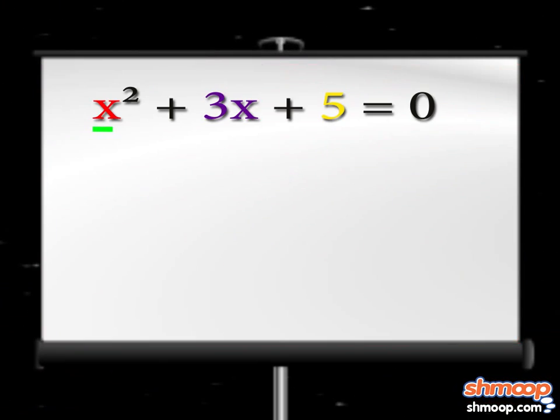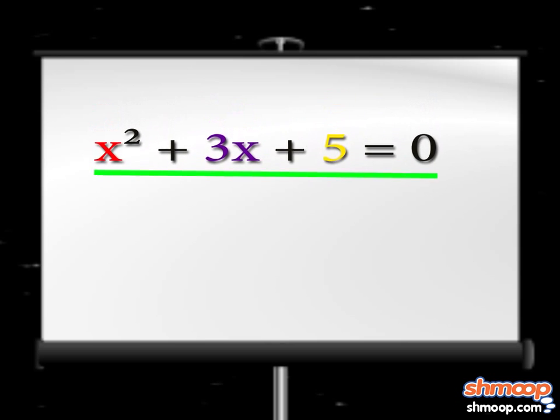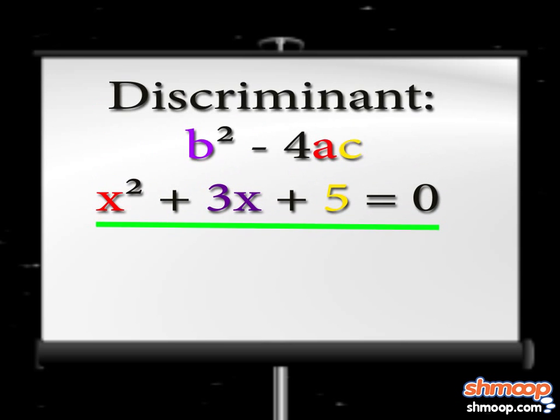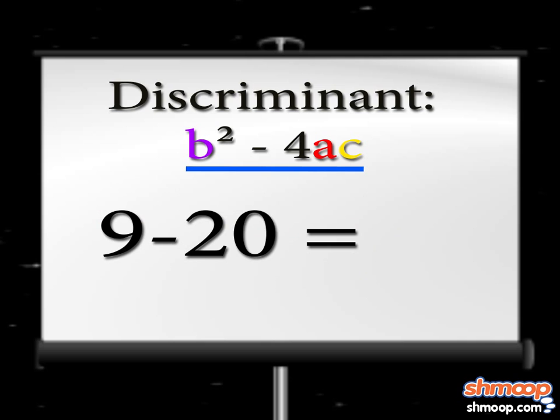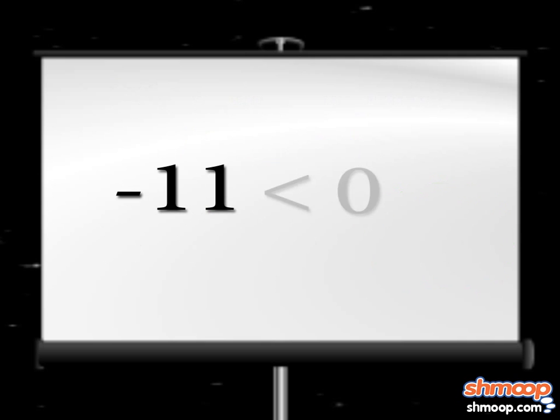Our first example is x squared plus 3x plus 5 equals zero. Plugging these bad boys into the discriminant, b squared minus 4ac, we get 3 squared minus 4 times 1 times 5. This simplifies to 9 minus 20, which is negative 11. And this is less than zero.